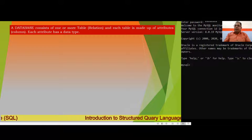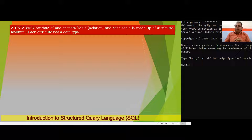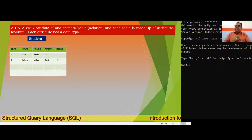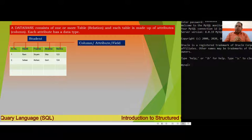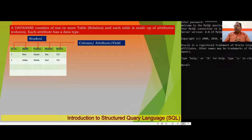A database consists of one or more tables, also known as relations. Each table is made up of attributes, also known as columns or fields, and each attribute has a data type. For example, I have a table named 'Student' with five attributes: serial number, name, father name, mother name, and roll number. These column names are called attributes or fields of the table. I have two rows filled with data — these rows are known as records or tuples.